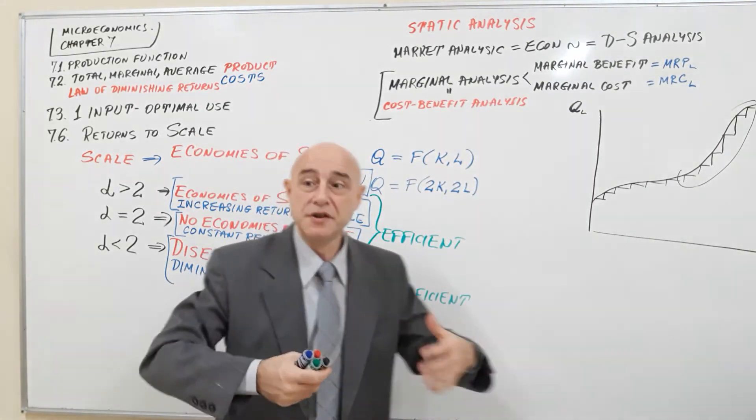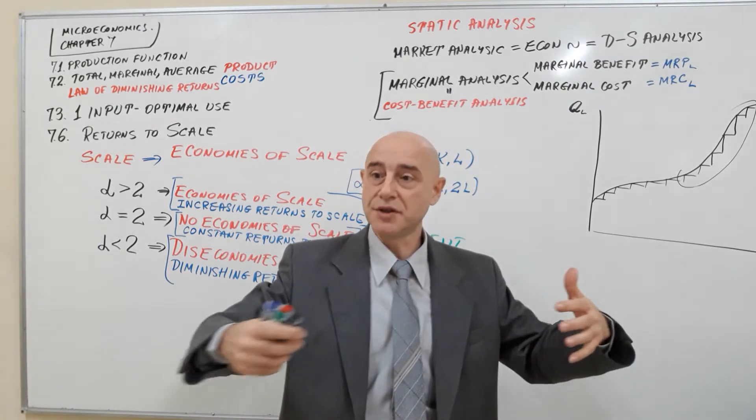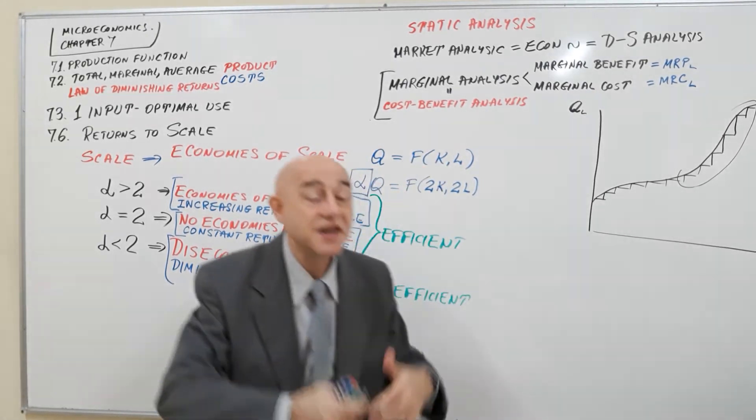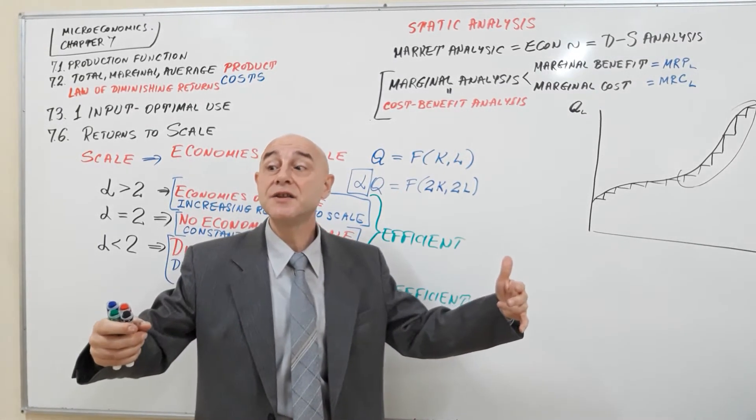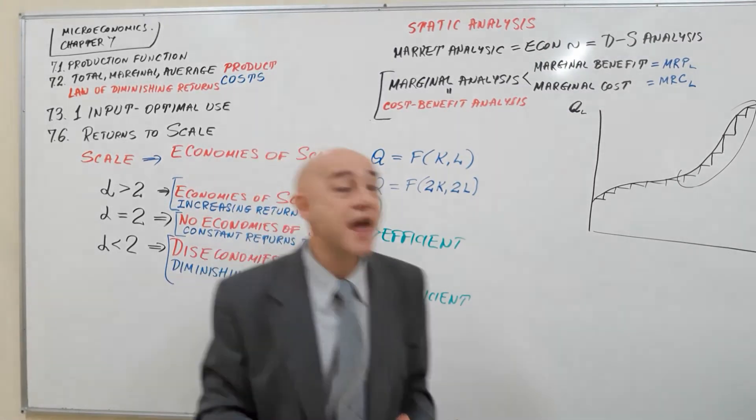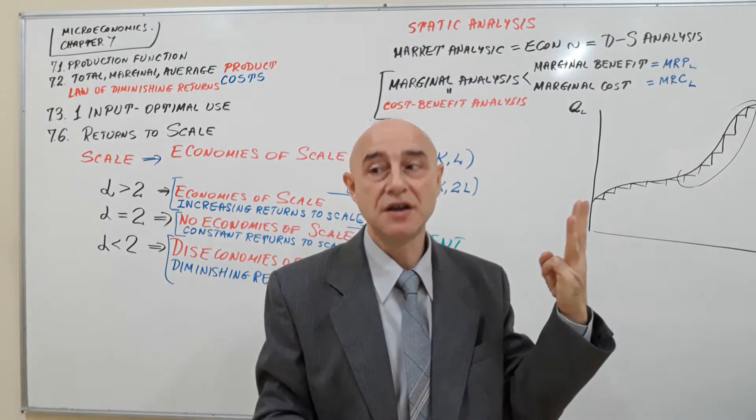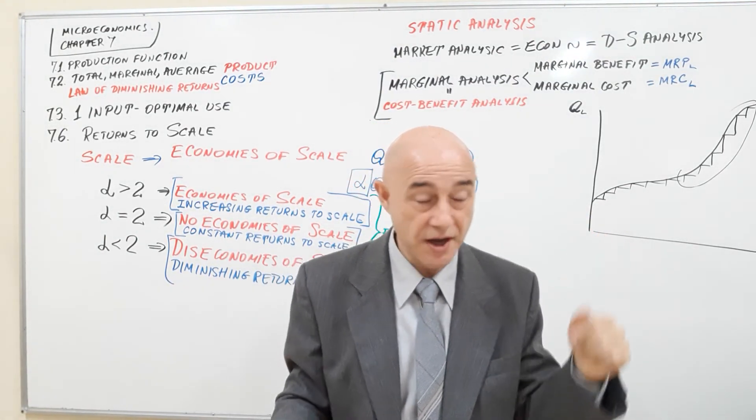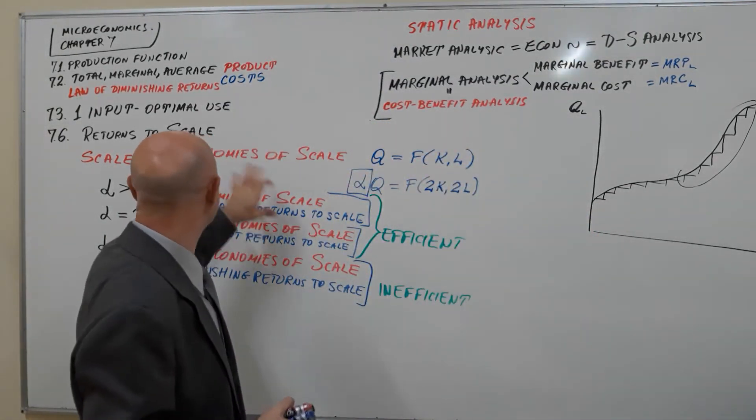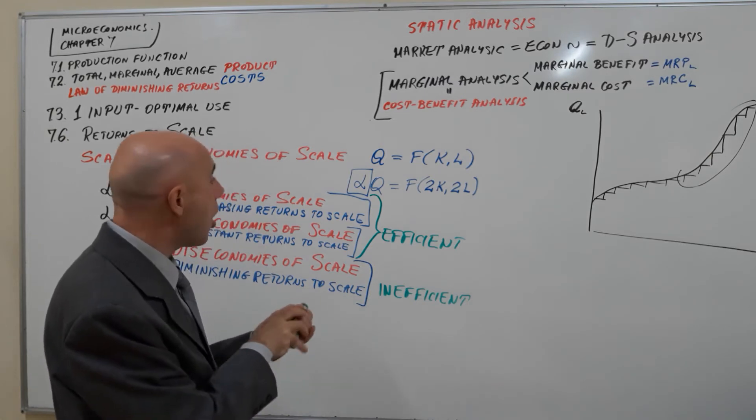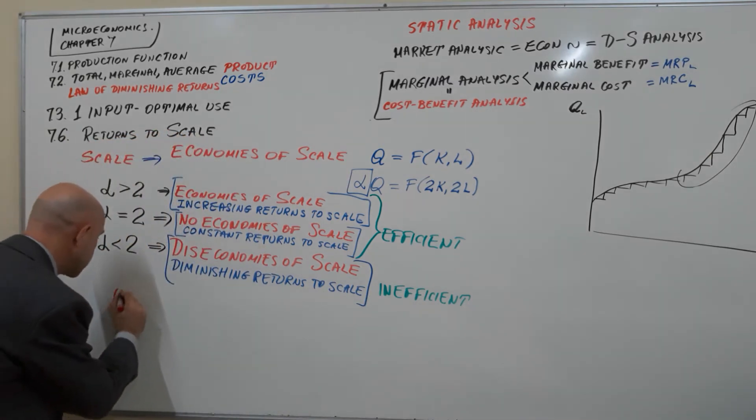For example, university. University can double the number of rooms and it can double the number of teachers, and it can probably triple the number of students. So you have what's called now optimum scale.